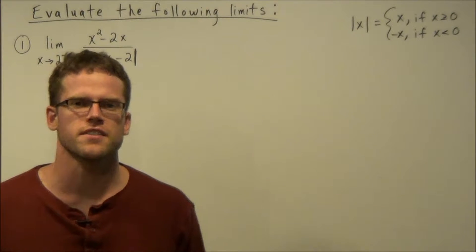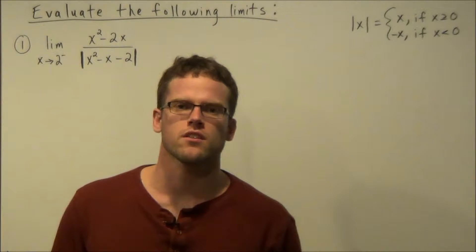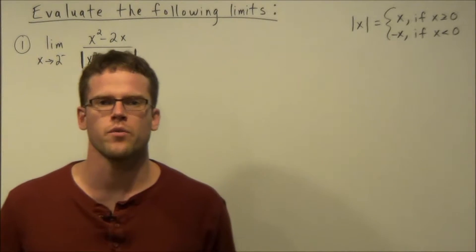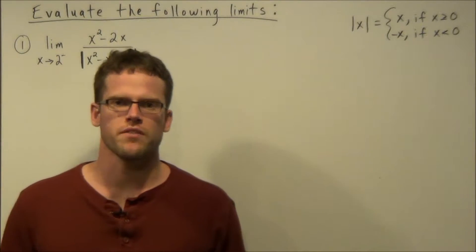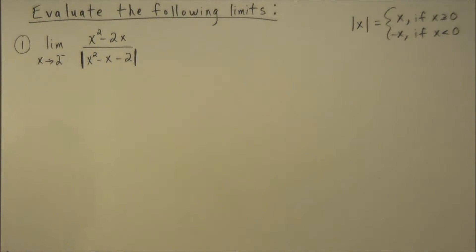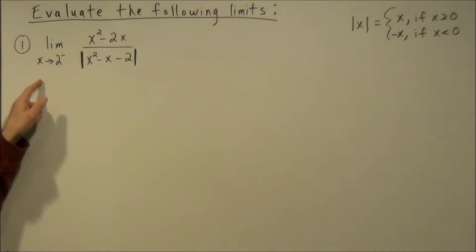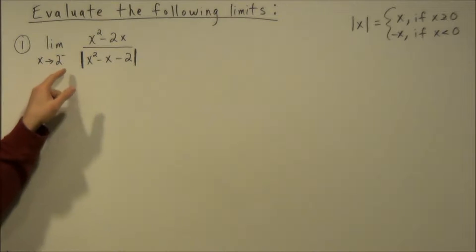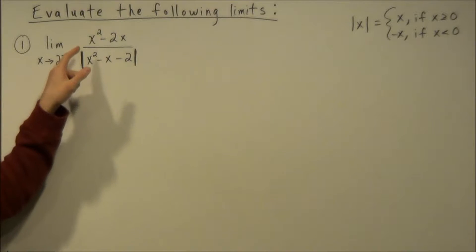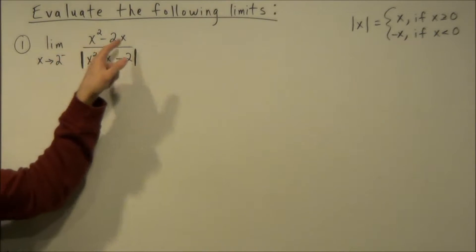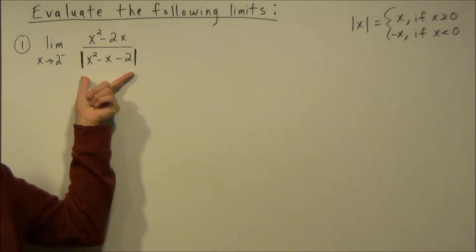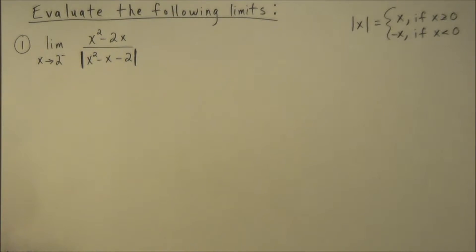Hi, my name is Vincent and today I want to take a look at evaluating limits involving absolute value. We have two examples to evaluate. The first is the limit as x approaches 2 from the left of x squared minus 2x over the absolute value of x squared minus x minus 2.